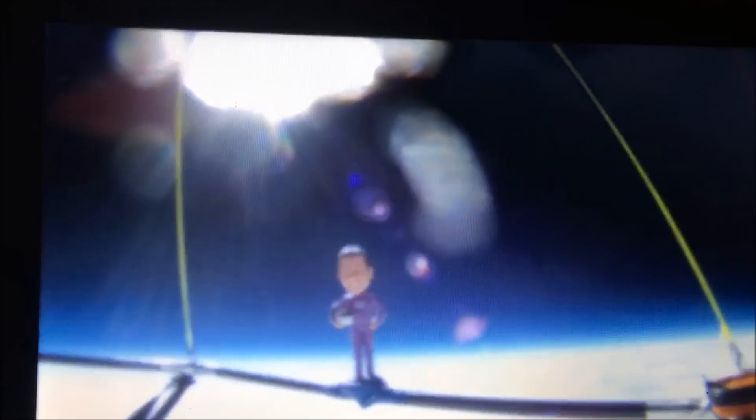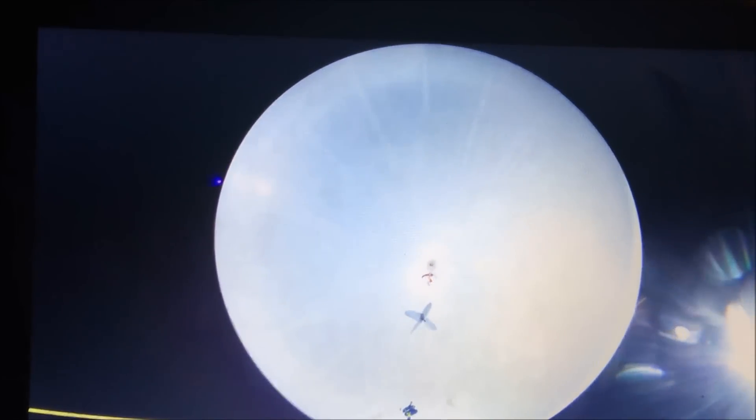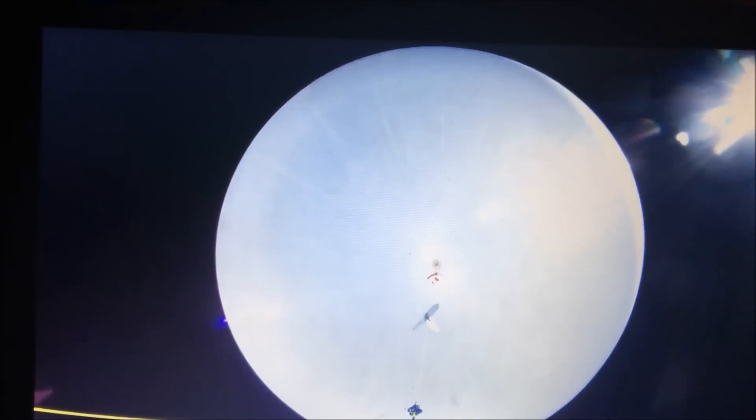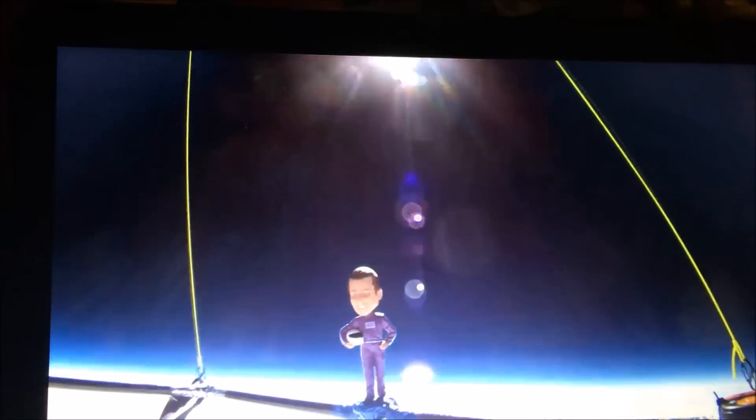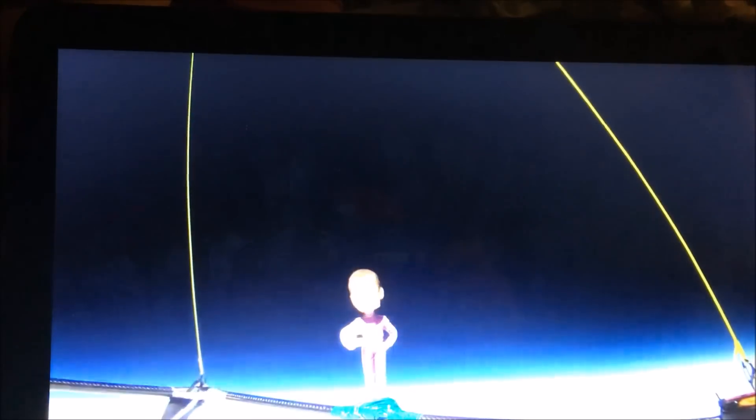We all know that they are CGI images and they're just complete crap. The space agencies can't even agree on what tint the water is, what shade the land is. You gotta admit it's pretty pathetic when you're getting paid like 10 to 20 billion dollars a year to make people think we live on a globe and you can't even agree on what color the water or the land is.